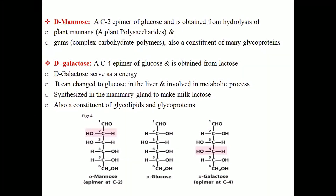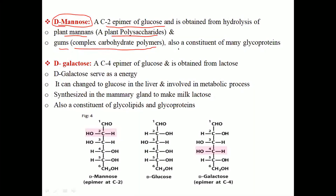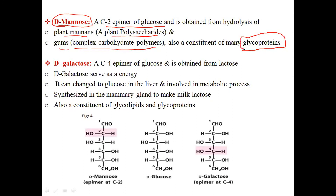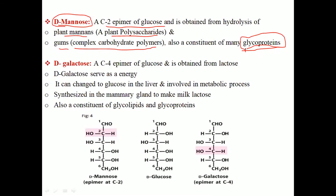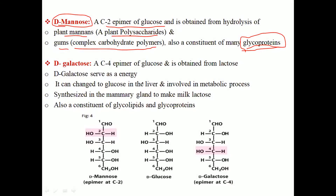Next is D-mannose. D-mannose is also a hexose and has the same molecular formula as glucose. It is the C2 epimer of glucose and is obtained from the hydrolysis of plant mannan. Mannan is a polysaccharide found in plants and gums, which are complex carbohydrate polymers found in plants and also as a constituent of many glycoproteins — glycoproteins being formed when carbohydrates and proteins combine.